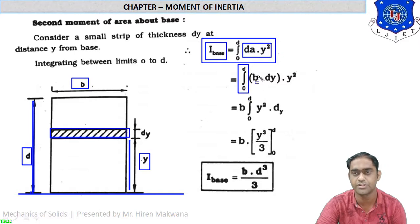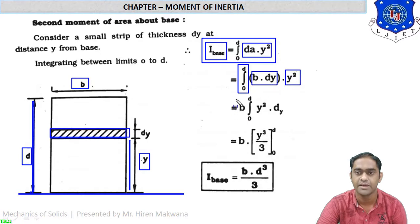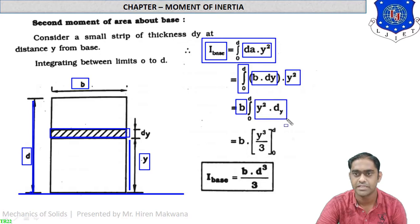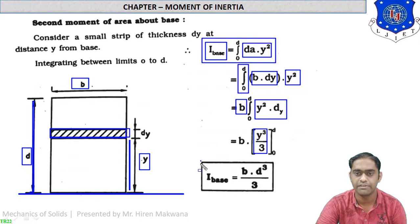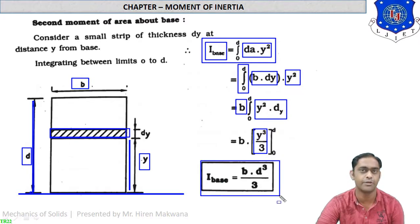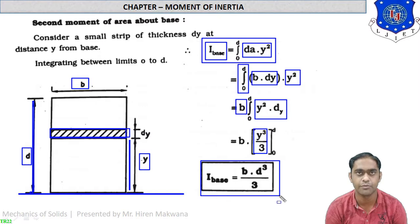Integrating from 0 to d, replacing dA with b times dy and keeping y squared, b is taken out as constant. Integration of y squared dy gives y cubed by 3, from limit 0 to d. Substituting the limit gives b times d cubed by 3. So there are two formulas for the rectangle: bd³/12 about the centroidal axis, and bd³/3 about the base axis.